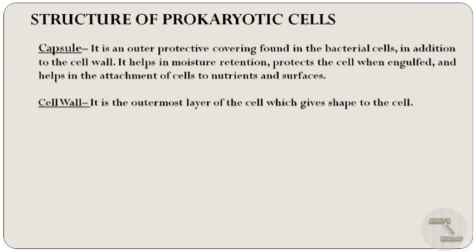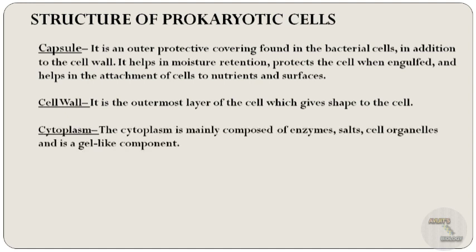The outermost layer of the cell which gives shape to the cell is known as the cell wall. The main component of the bacterial cell wall is peptidoglycan. Cytoplasm simply means everything found inside the plasma membrane. It is a gel-like structure inside the plasma membrane, mainly composed of enzymes, salts, and cell organelles.